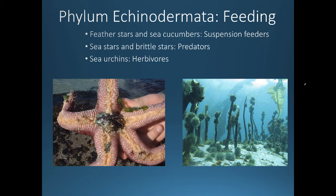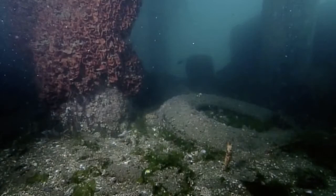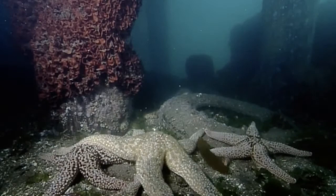Within Echinodermata there are many feeding behaviors. Feather stars and sea cucumbers are suspension feeders; sea stars and brittle stars are predators; and sea urchins are herbivores. Let's look at a video showing how sea stars hunt for prey. Here you can see a sea star in the middle and a tiny clam — the sea stars appear to move quickly because this is time-lapse photography; they're actually quite slow.